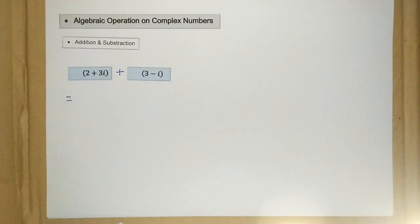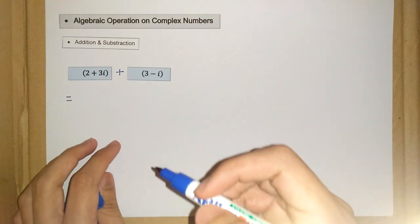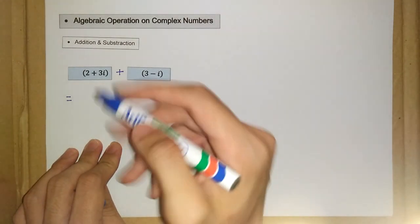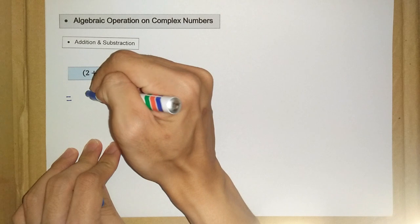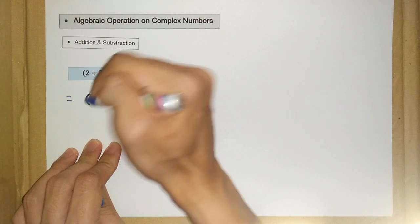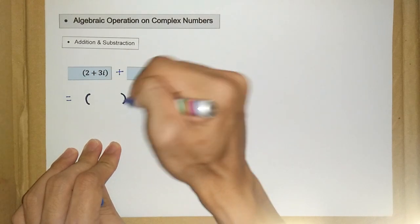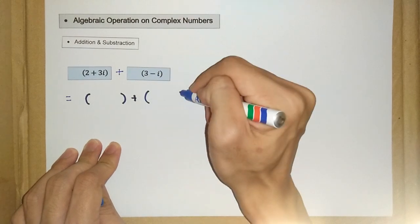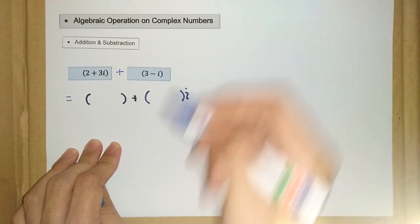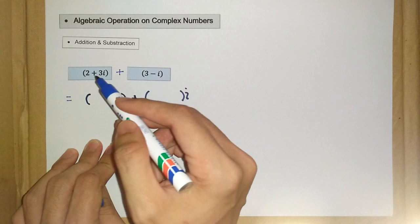So we have here, let me change the marker. So what we have here for a complex number is the real part plus the imaginary part. For the real part here,